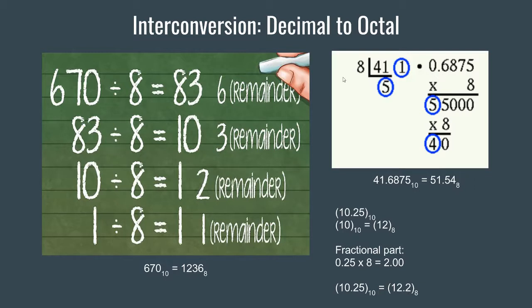Now, in case of decimal to binary, for the fractional part we multiplied by 2 until we got a perfect 0 at the end. In this case we will do the same thing, but that multiplication by 2 will be replaced by multiplication by 8. So we multiply this decimal part by 8. 0.6875 multiplied by 8 gives 5.5.